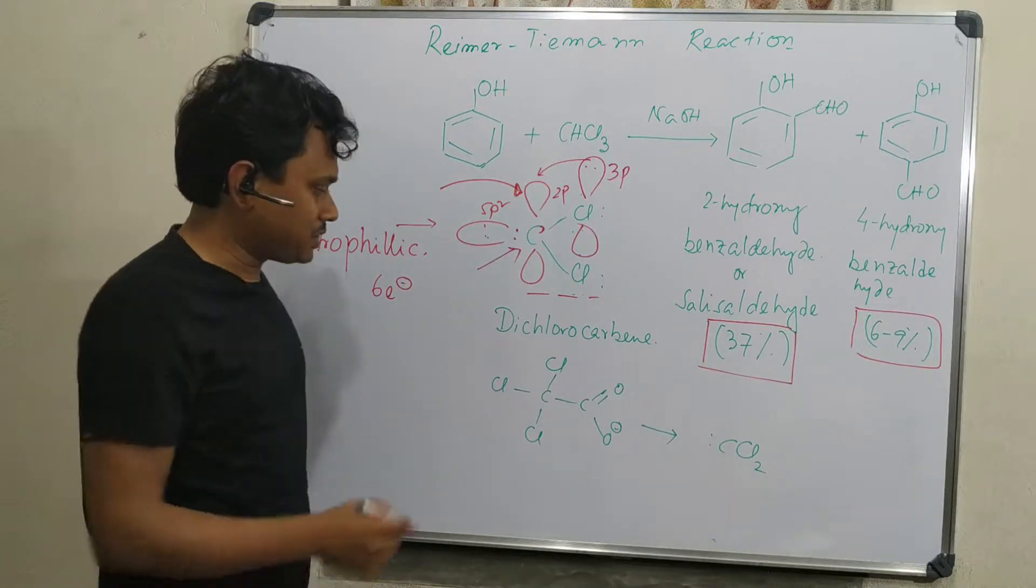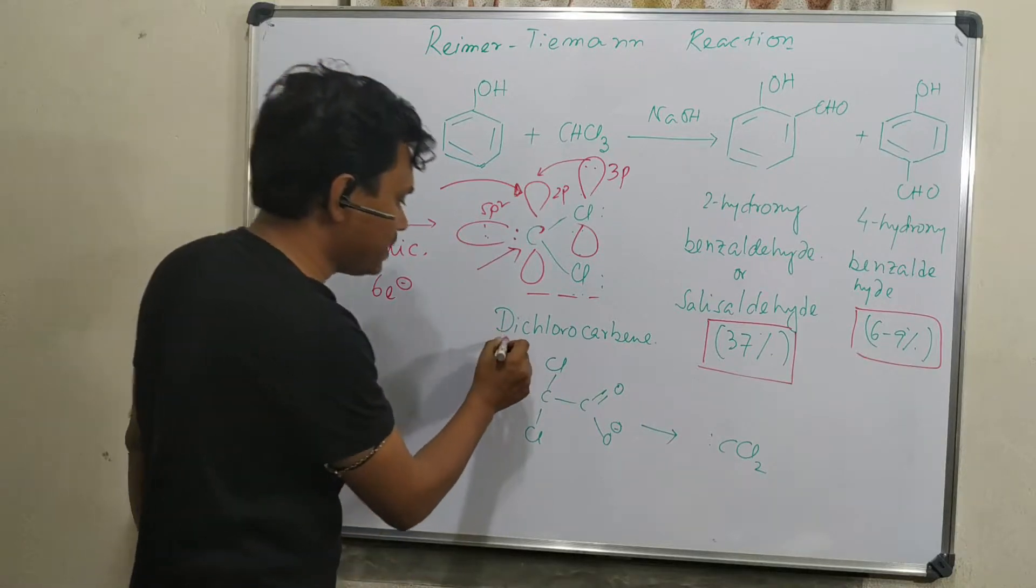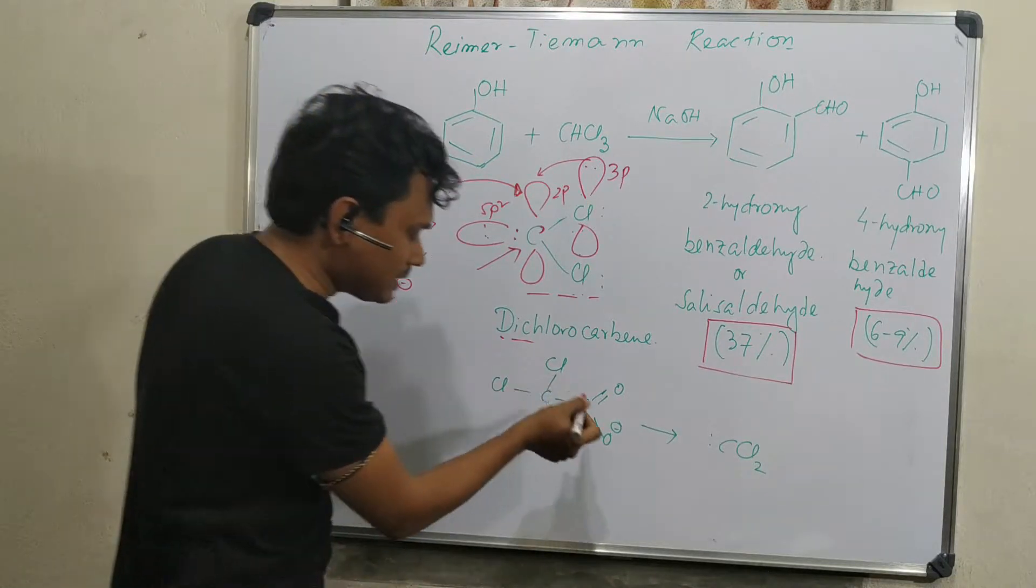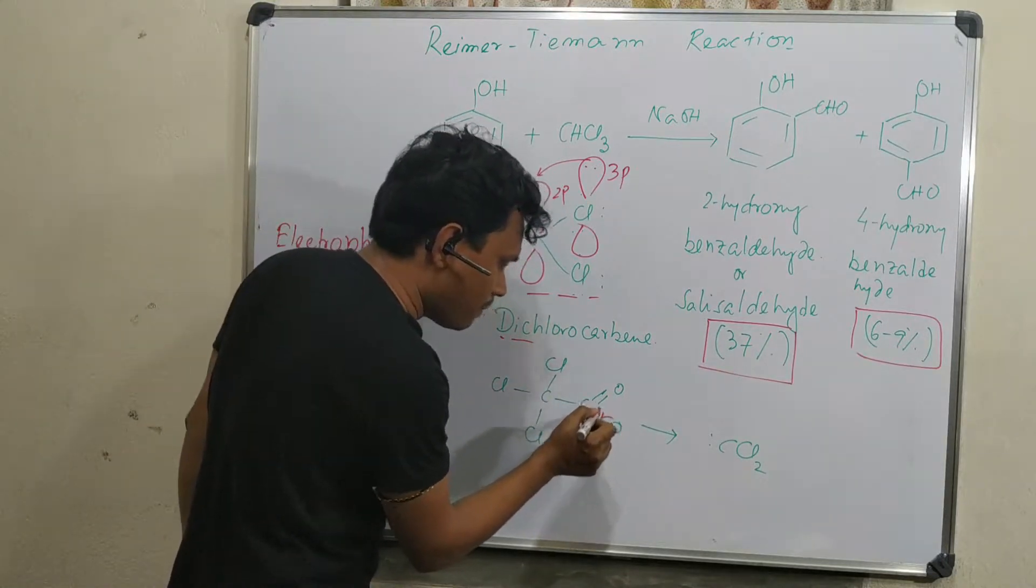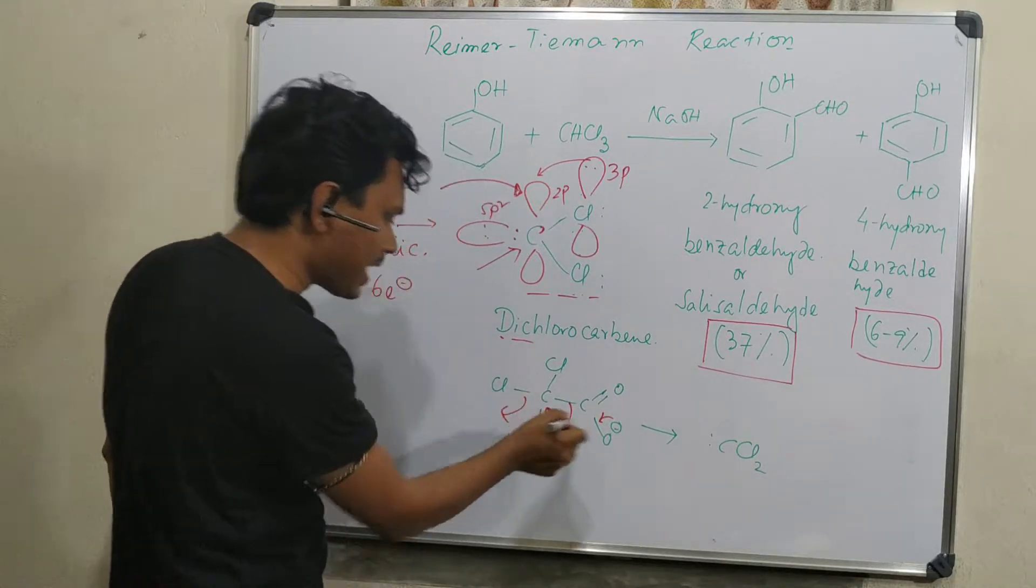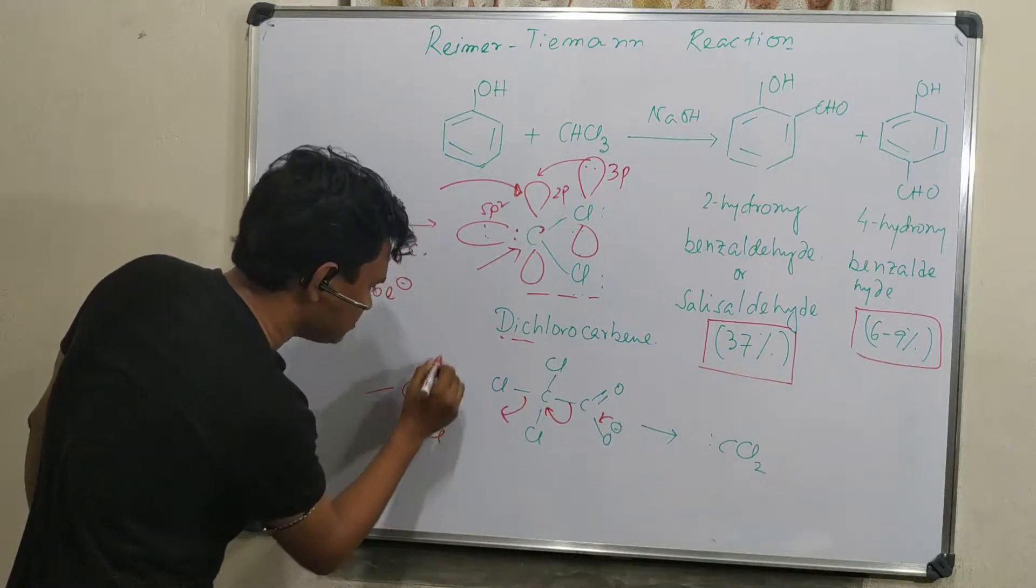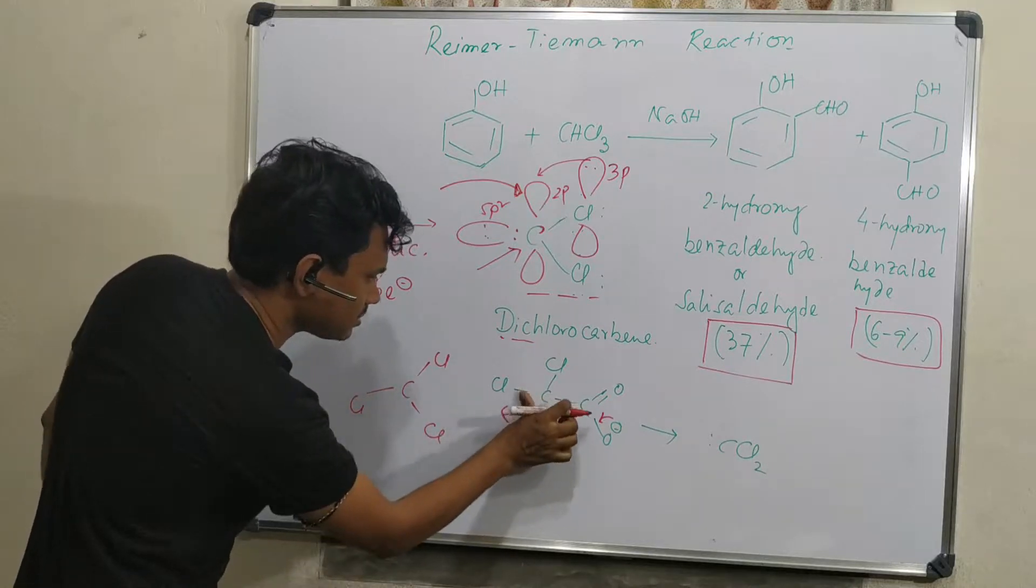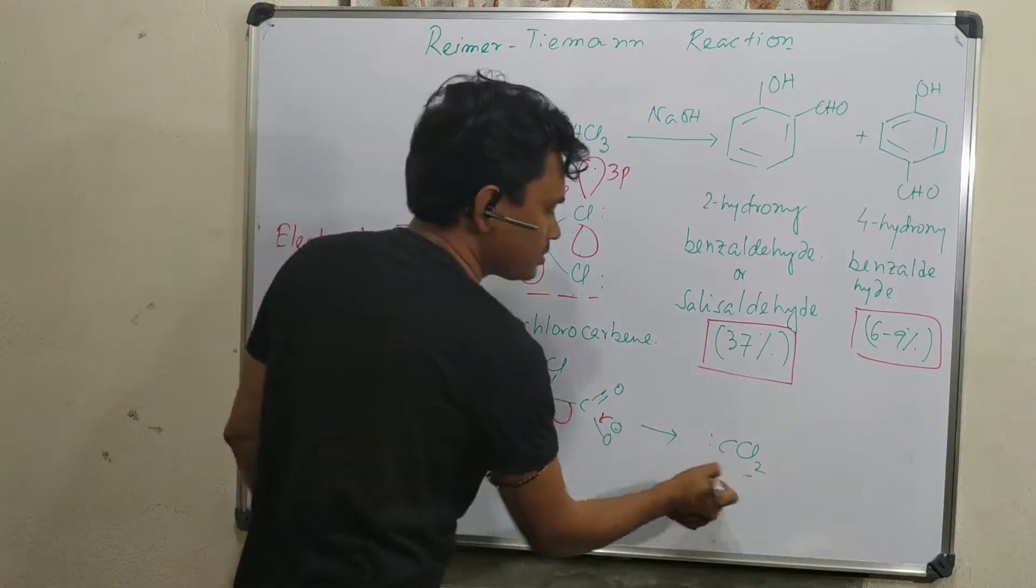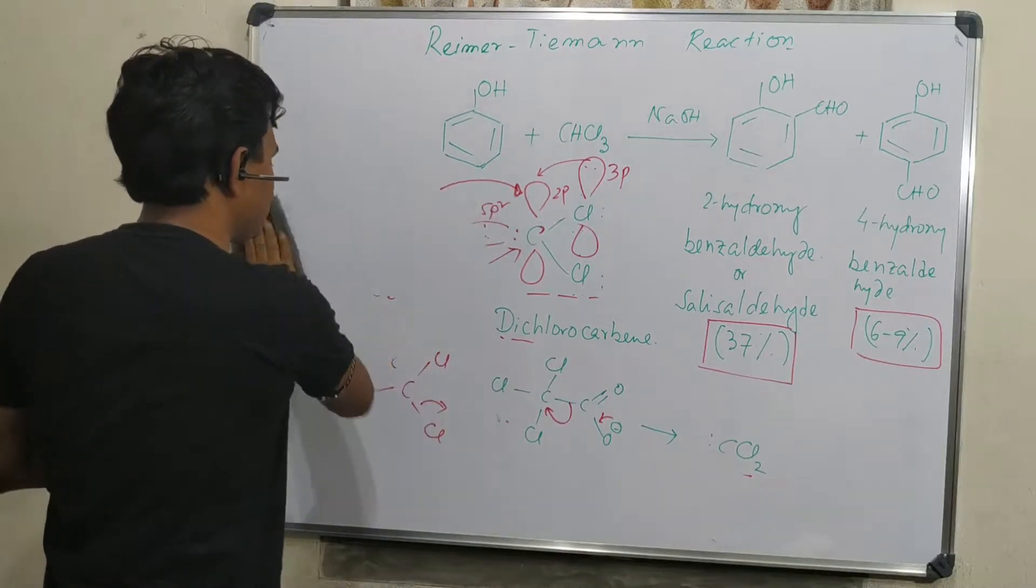One more thing to keep in mind: this dichlorocarbene generation for the Reimer-Tiemann reaction can also be achieved from another substrate, trichloroacetate salt. This trichloroacetate decomposes and eliminates carbon dioxide, producing CCl3 minus. This CCl3 minus then eliminates one chloride to produce dichlorocarbene. This is the basic introduction of this reaction.